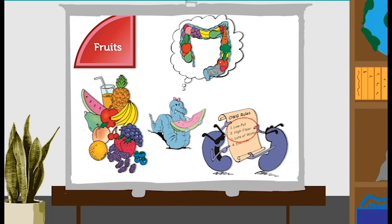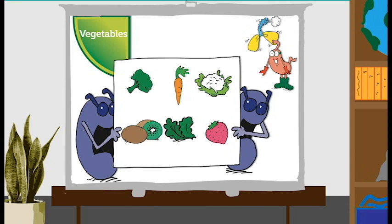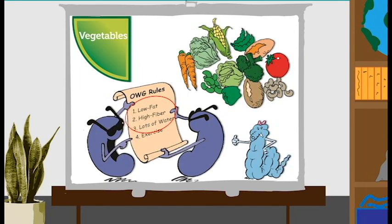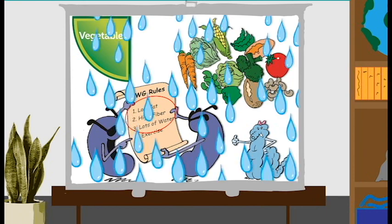Here we have the vegetable section. The first one is broccoli. The next one is a carrot. Then we have cauliflower, kiwi, spinach, and the last one is a strawberry. Okay, can you decide which two don't belong in the vegetable group? Are you ready? The strawberry and the kiwi. This group of foods not only fits naturally into the OrganWise Guys rules of low fat, high fiber, but another one as well. Lots of water.